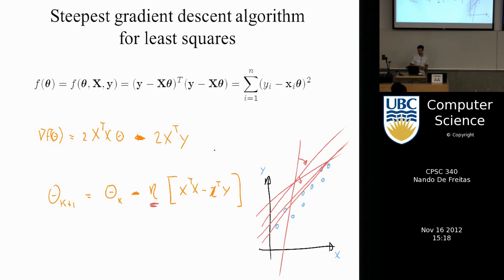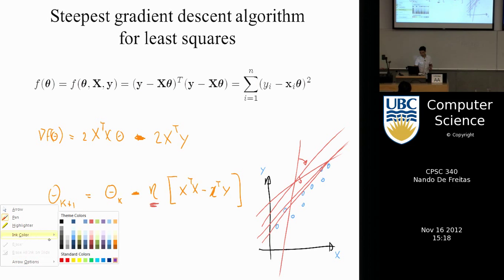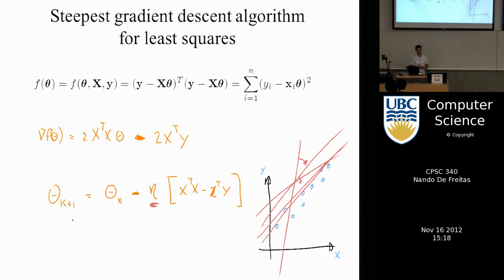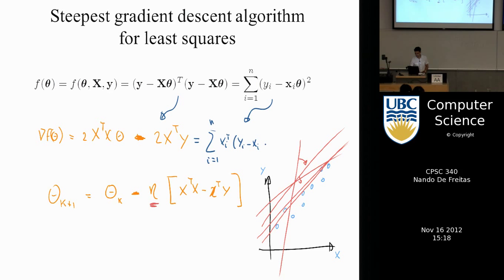Before Newton's method: gradient descent for the linear model is fairly easy. We compute the gradient — you can differentiate the error function — and it gives you the expression: sum from i=1 to n of x_i^T times (y_i - x_i * theta), with a minus one factor because it's times minus x_i.